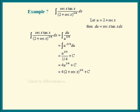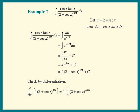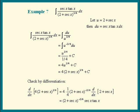Remember, we can always check by differentiating. So let's differentiate our answer. Copy the constant factor 4 and apply the power rule for differentiating: pull down the power, subtract 1 from the power, then differentiate the inside. The 4's cancel. We get 2 plus sec x to the negative 3 quarter power times the derivative of 2 — which is 0 — plus the derivative of sec x, which is sec x tangent x. That is the integrand.